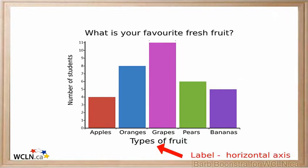The label on the horizontal axis tells you what is being graphed. In this case, it is the type of fruit.